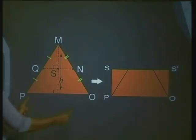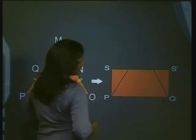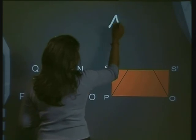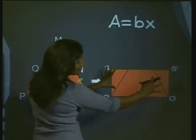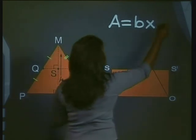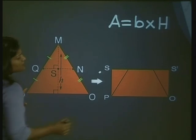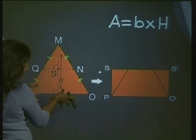We have kept the base of this triangle PO the same in this rectangle. We know that the area of a rectangle is area equals base times—and I'm going to call the height of this rectangle capital H. Now when we formed this rectangle, all we did was move pieces of the triangle to make this rectangle.